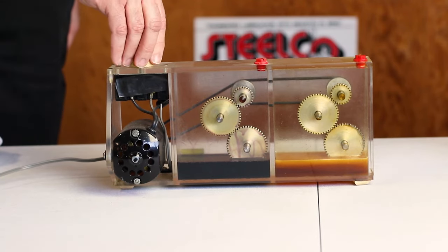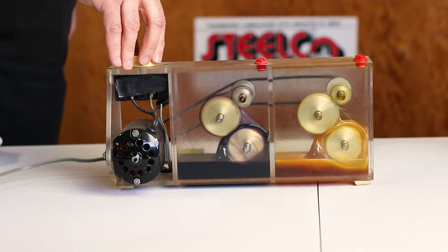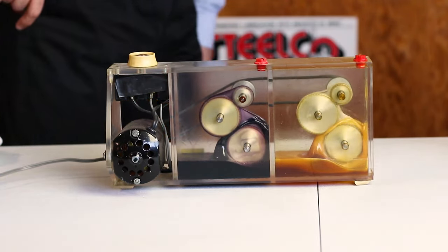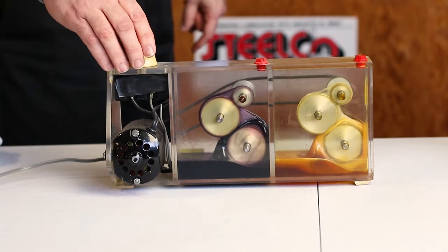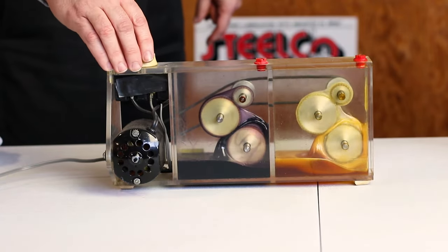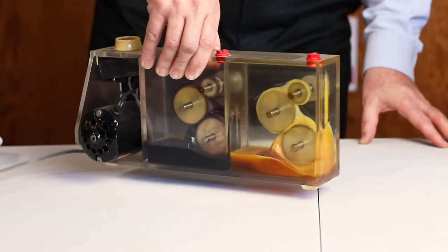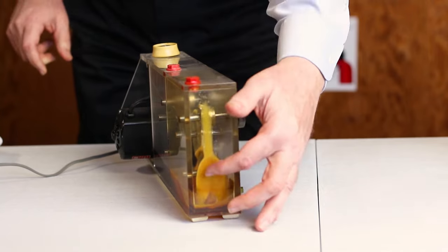Now regular gearboxes - this would look like your regular gearbox. Right now as you can see, if I turn it, the gear oil is slinging to the sides.